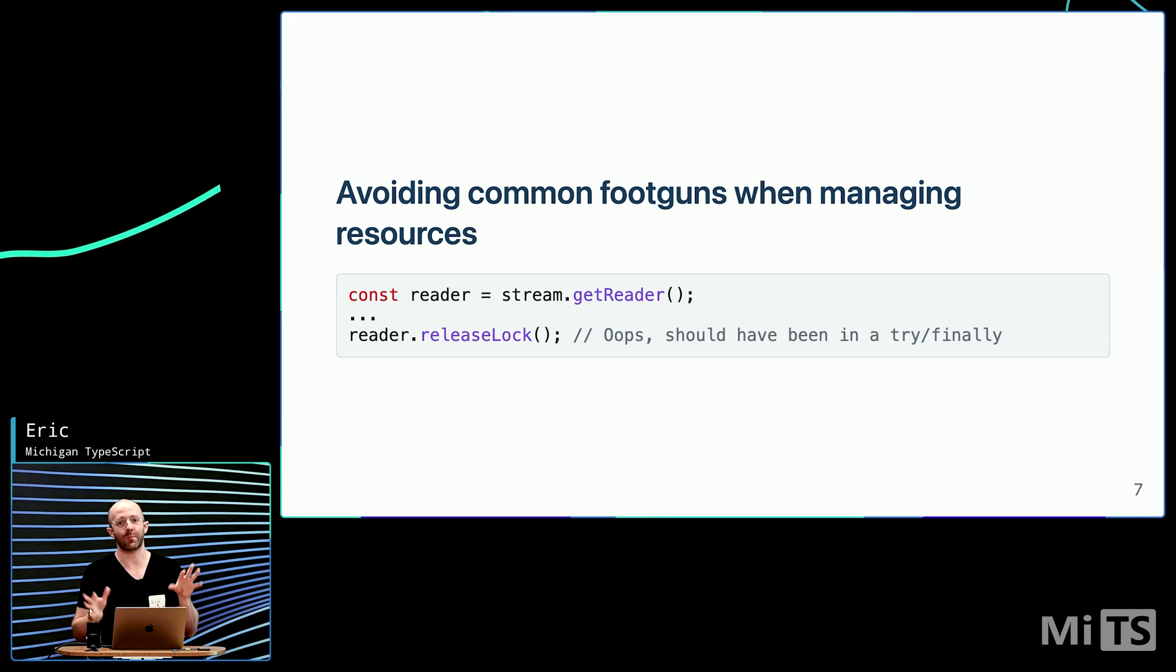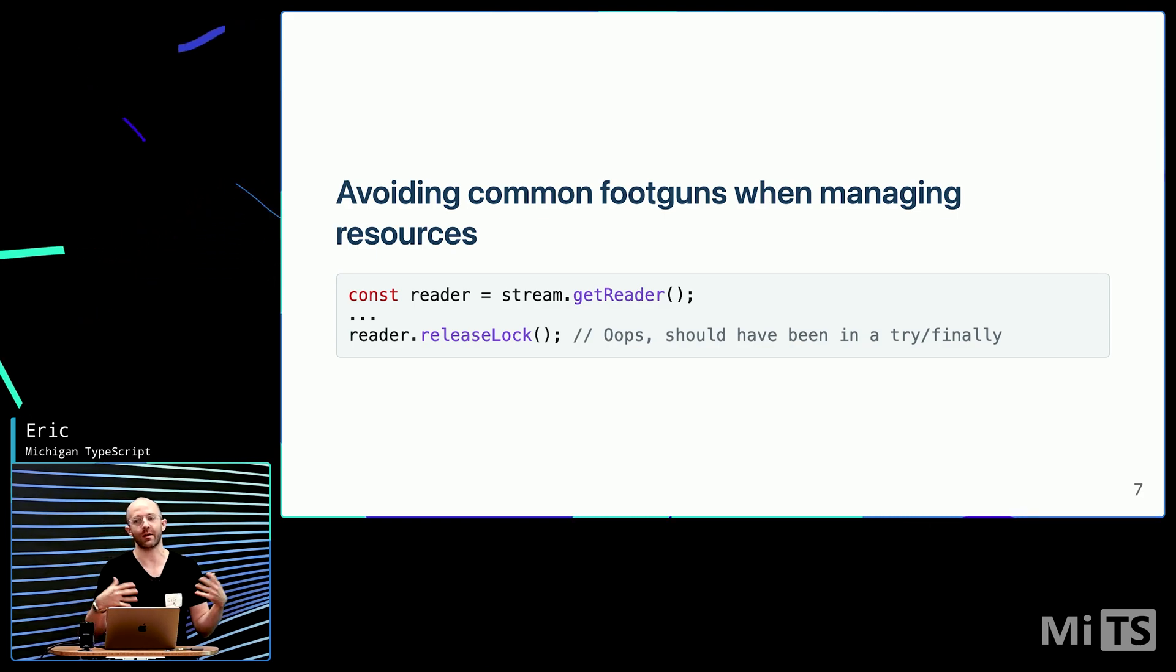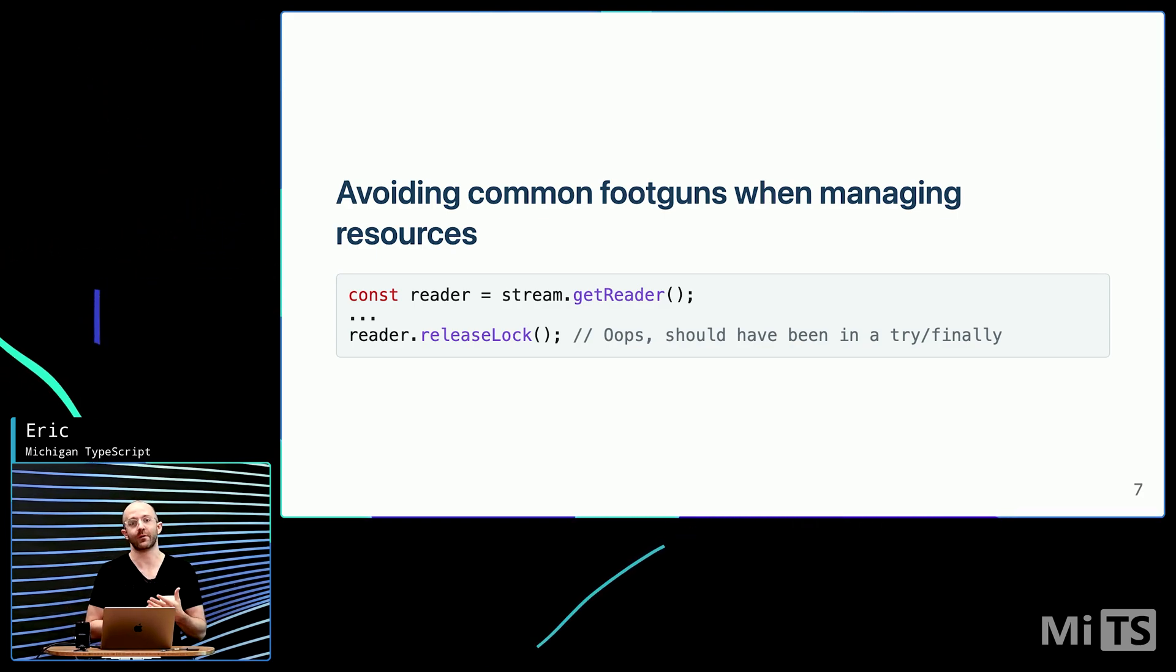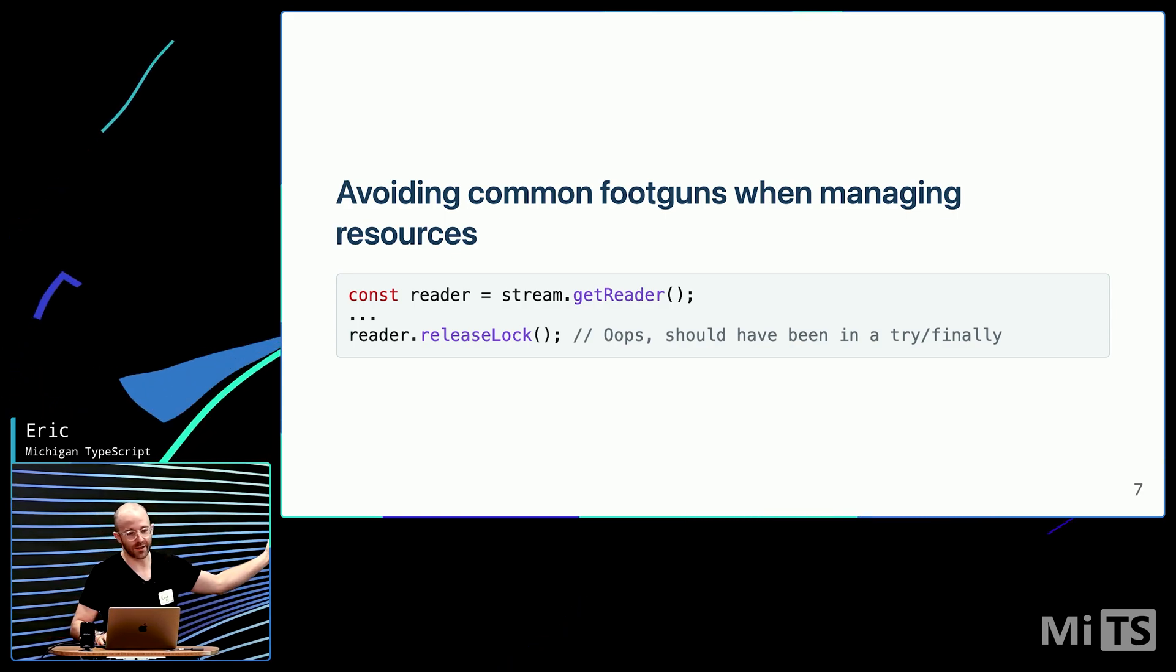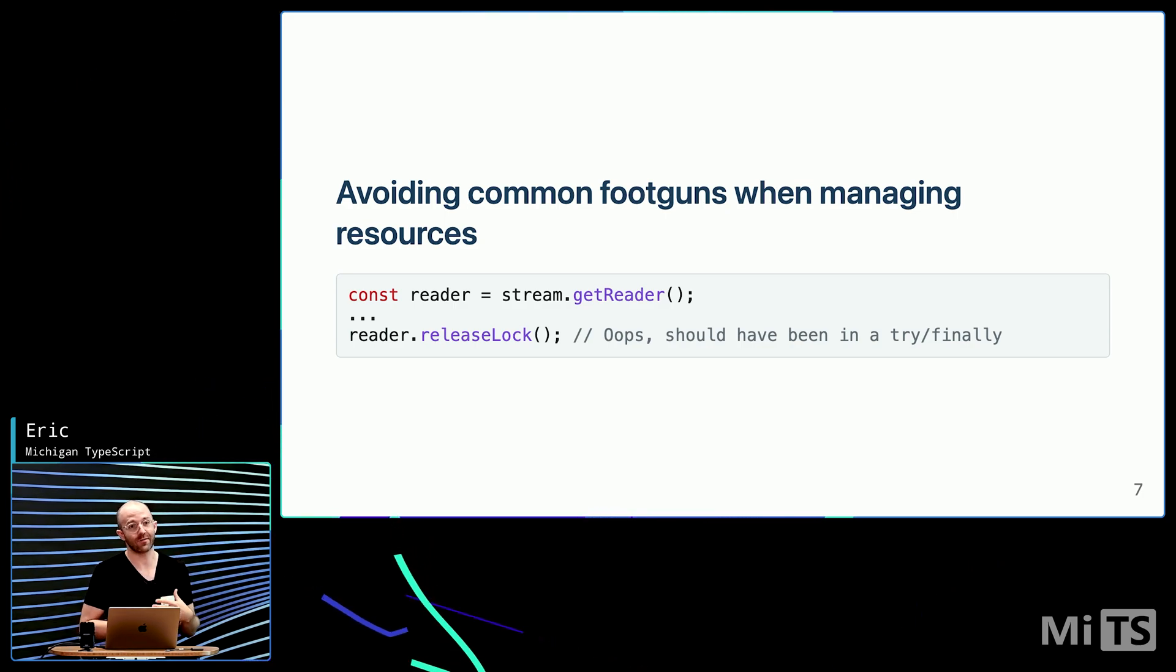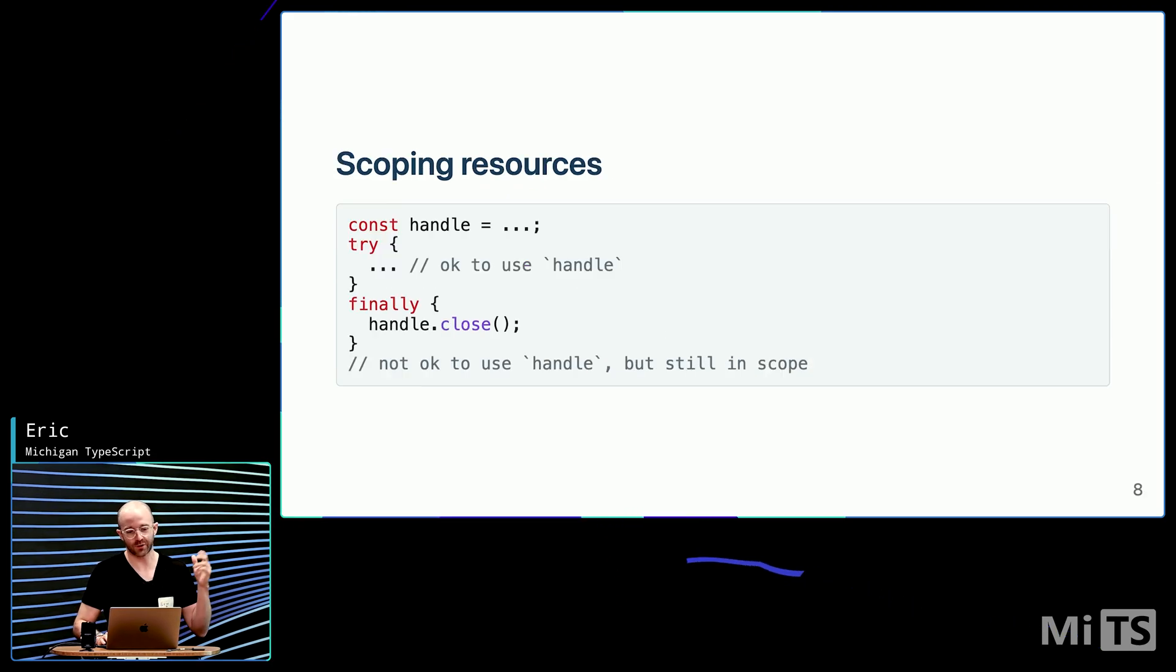I'm going to go through just a couple code examples that they showcased in their 5.2 release. If you forget, or if you run the release lock outside of a try finally, you could have an error before you get to the release lock, which would then further cause issues. Scoping resources, try finally, once you close the handle, you can't use it again.